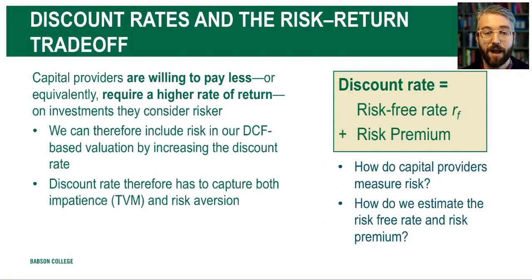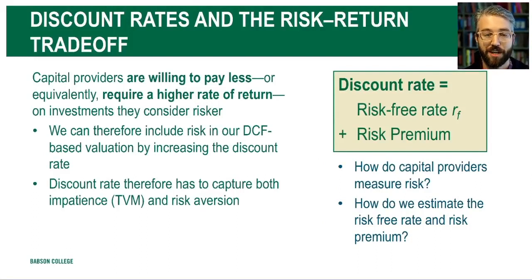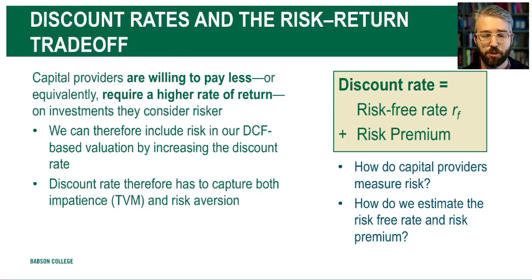There are a variety of ways that we could try to include risk in our valuation models. We're going to introduce one: higher risk is going to show up as an elevated discount rate. So by increasing the discount rate, we're going to capture both impatience — the pure time value of money — and investors' risk aversion. That higher discount rate is going to show up as lower asset prices and higher rates of return.